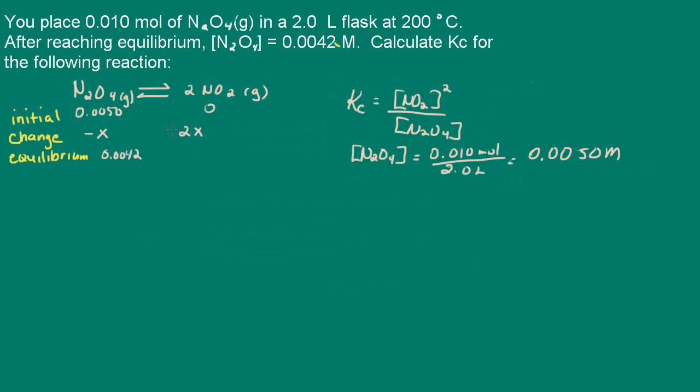And then, of course, at equilibrium, we'll have 2 times the concentration X. Now, what we can do is we can fill in the value for X here because we know the initial and final concentrations. So X is going to be the difference between the initial and the final concentrations. And that's going to be 0.0008 molar.